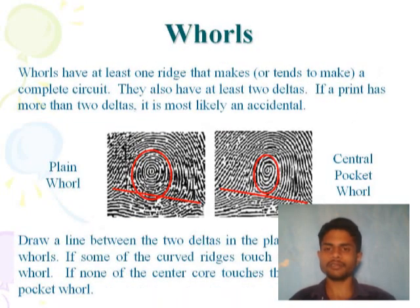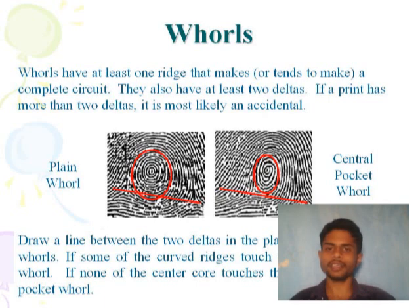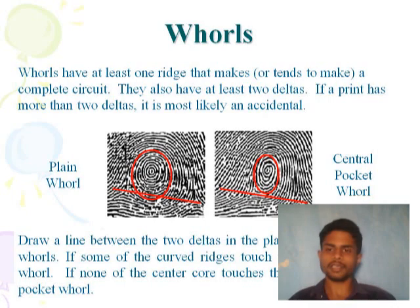The whorl pattern has a complete inner circle. If the print has more than two deltas, it will mostly be classified as accidental. The plain whorl has one of two deltas with different delta positions.